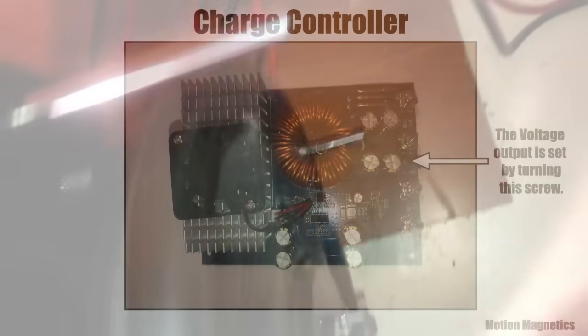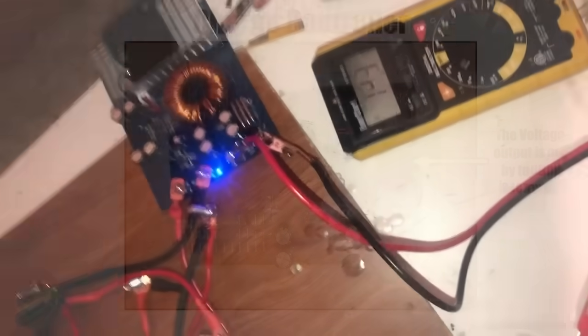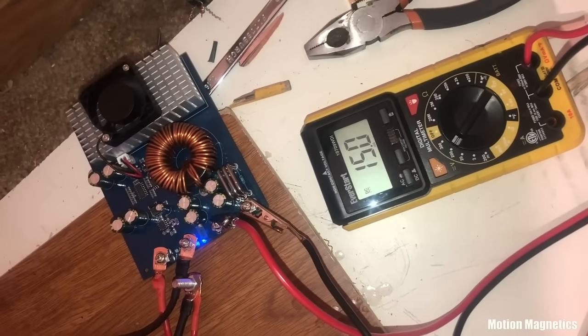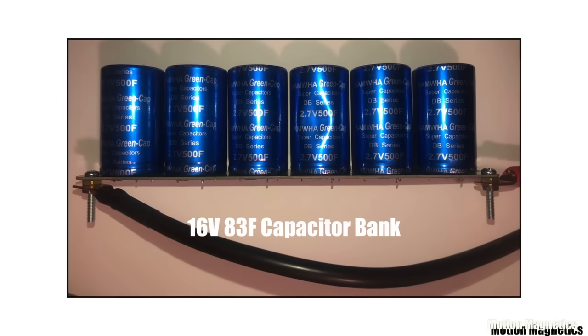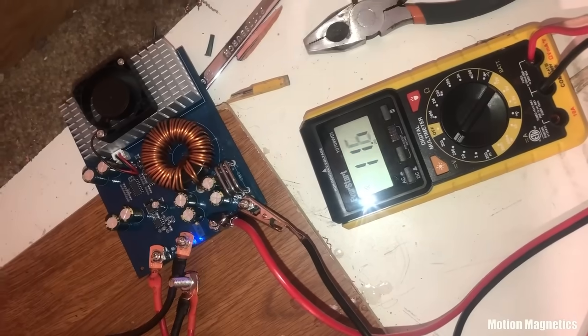To set the output voltage of the charge controller, I hand spun the generator and turned the screw until I reached 15 volts. Then I tested it by hand spinning the generator a couple more times to make sure the charge stopped at 15 volts. I picked 15 volts because I purchased a 16 volt capacitor pack and wanted to stay below its maximum capacity to avoid damaging it.